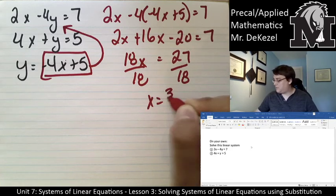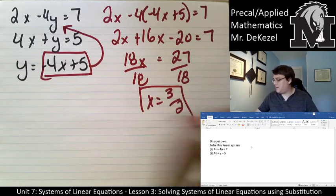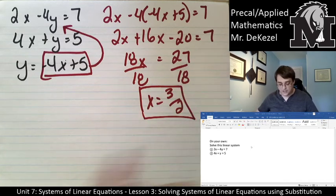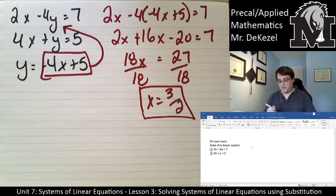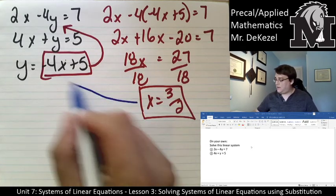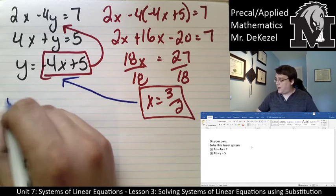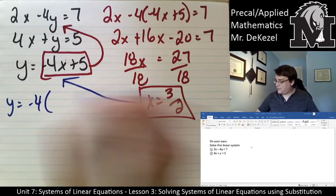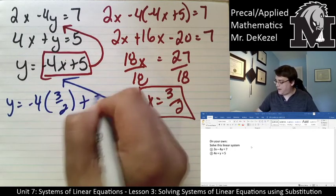x is equal to 3/2 once I reduce that fraction. I'm then going to take the 3/2 and I'm going to put it into my already rearranged equation right here. So y is equal to negative 4 times 3/2 plus 5.